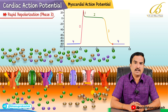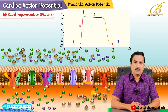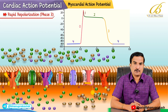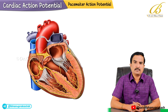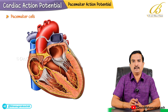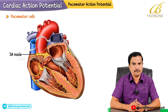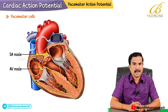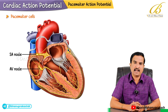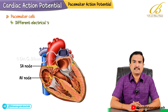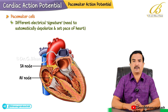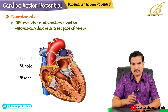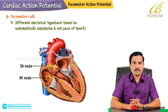This is what you need to know about the myocardial action potential. Now after discussing myocardial action potential, let us discuss the pacemaker action potential. Pacemaker cells are primarily found in the sinoatrial node - the SA node - and the atrioventricular node, the AV node. These cells have a different electrical signature because they need to automatically depolarize and set the pace of the heart to maintain its rhythmicity.